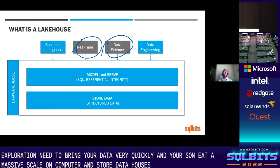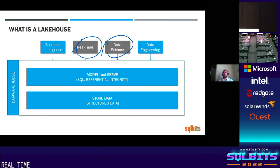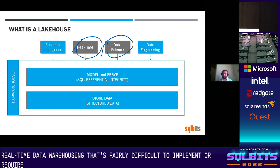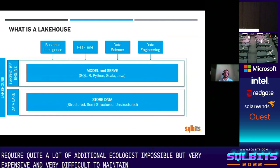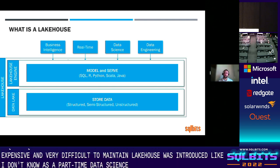Even if you go that road with a data warehouse for real-time, it's going to be really expensive. In data warehousing, real-time is fairly difficult to implement — it requires quite a lot of additional technologies. It's possible, but very expensive and very difficult to maintain. So Lakehouse was introduced a year or two ago as a practical pattern, aiming to cover all four scenarios: business intelligence, real-time, data science, and data engineering, using a single engine and a single platform.